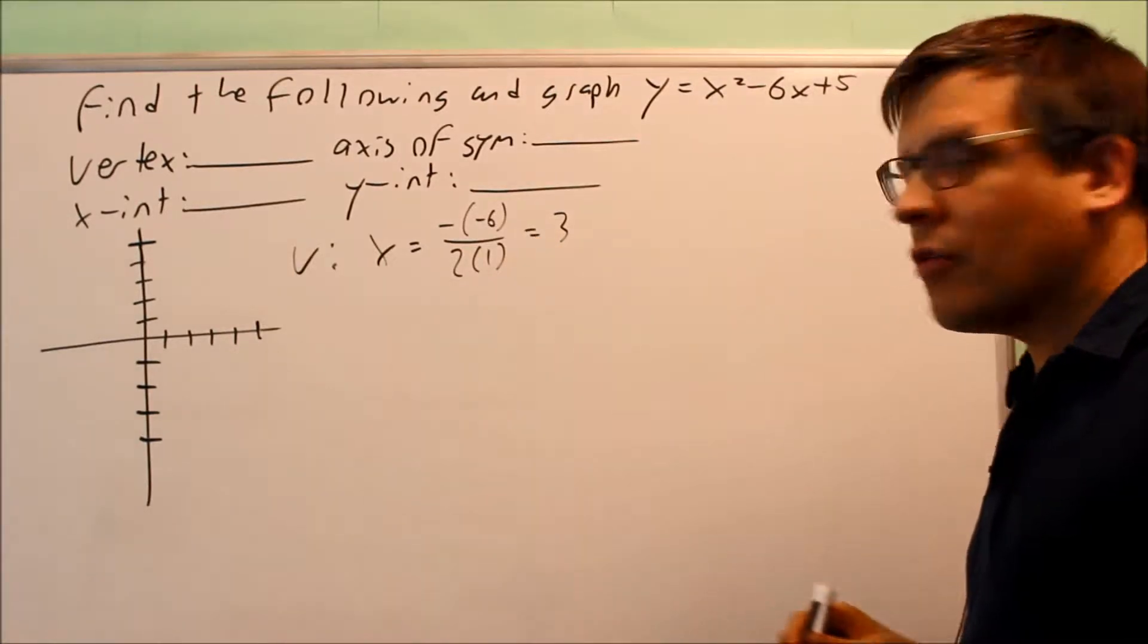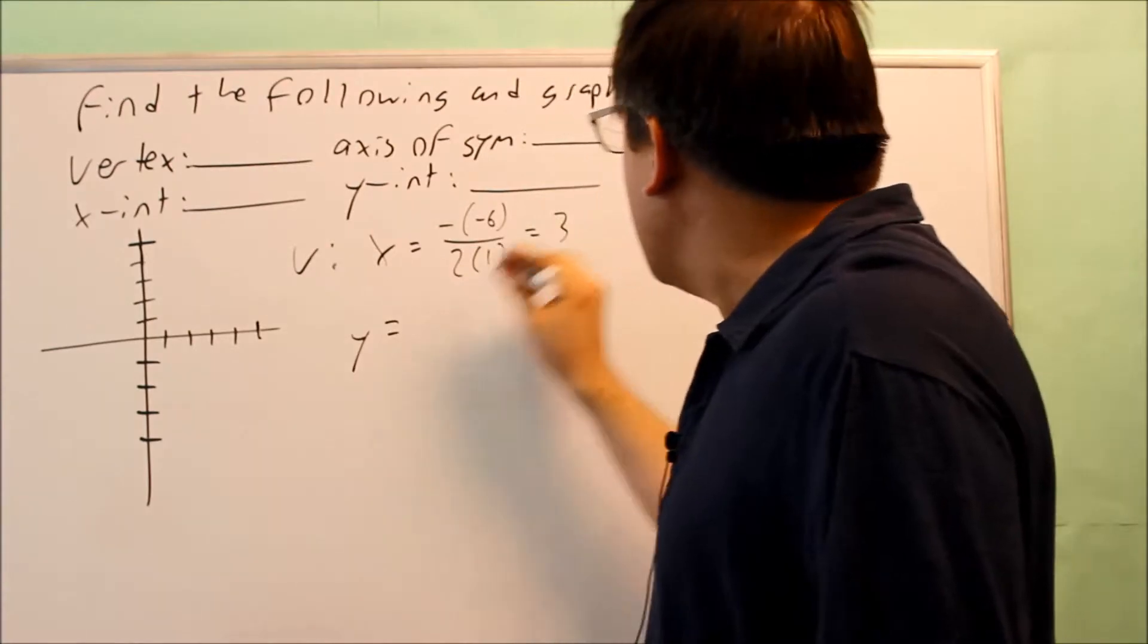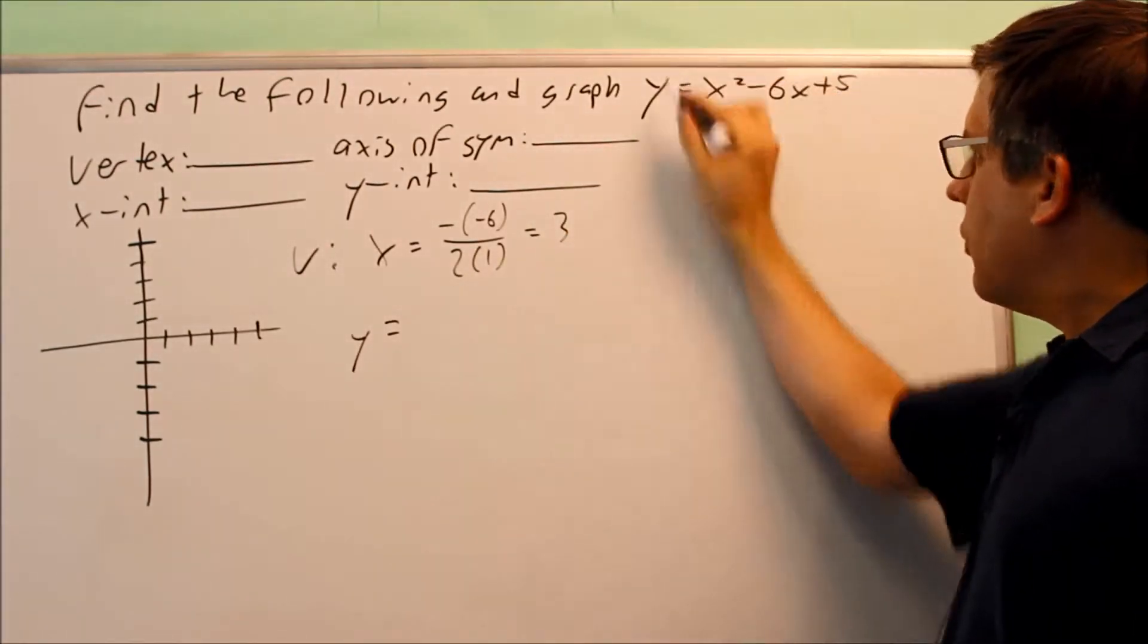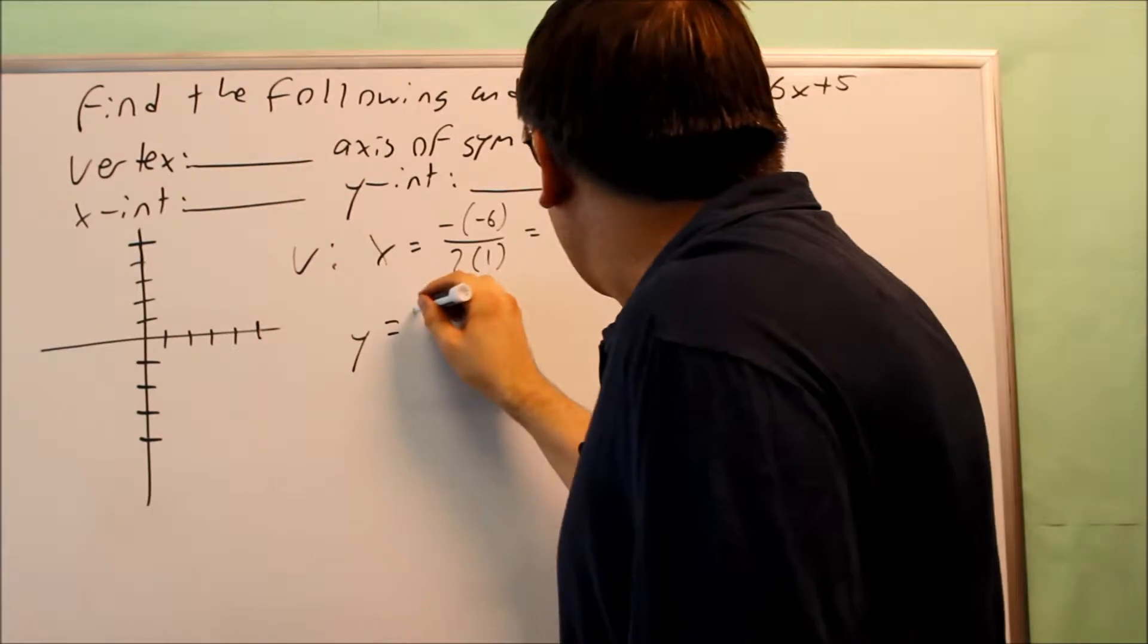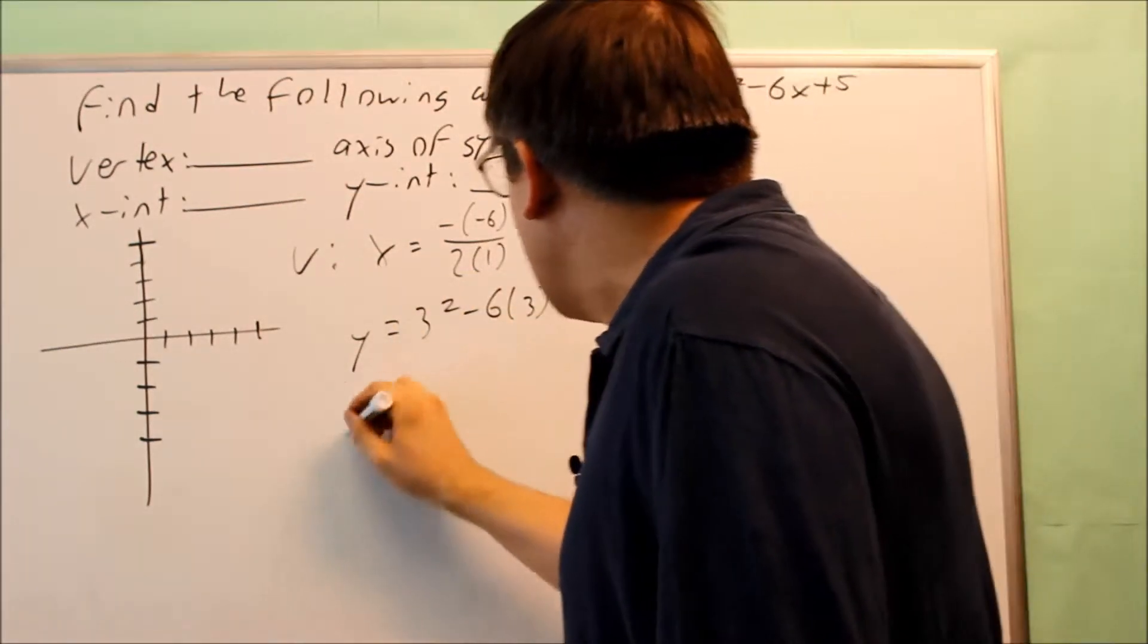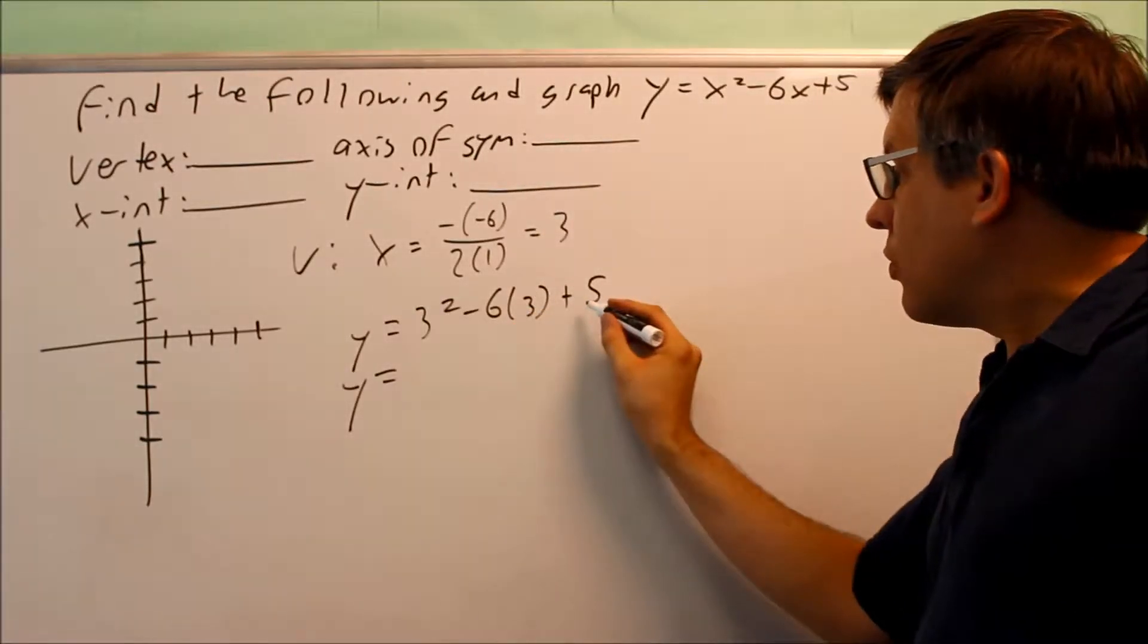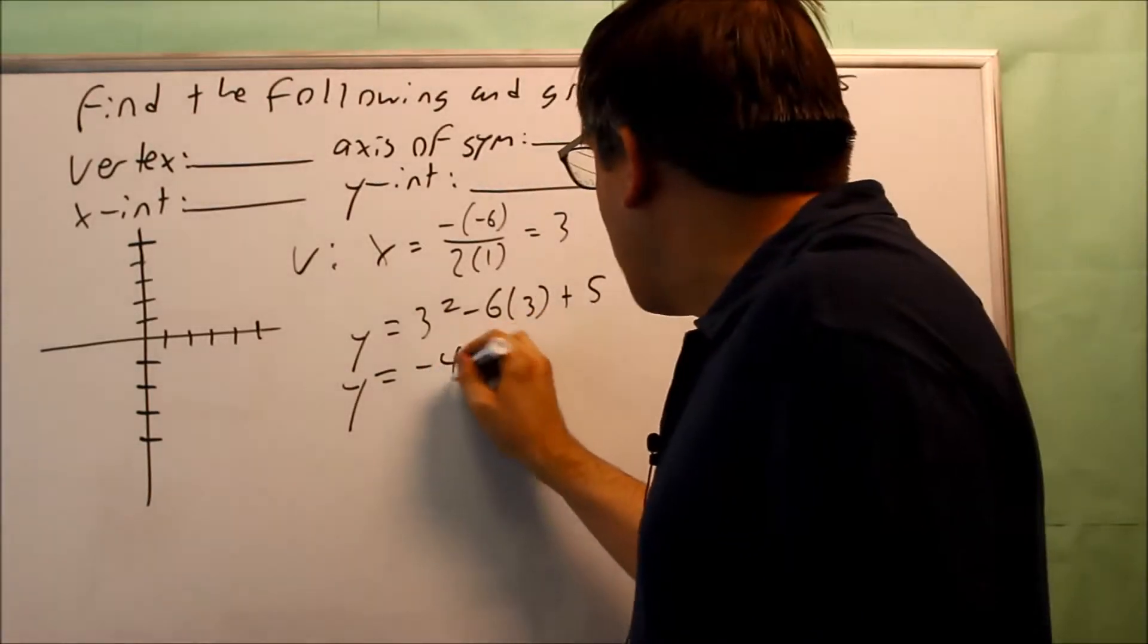So 3 is the x-coordinate for your vertex. You want to find the y-coordinate, and that's where you put 3 back into this equation here in place of x. So I have 3 squared minus 6 times 3 plus 5, and I get 9 minus 18. That's negative 9 plus 5 is negative 4.